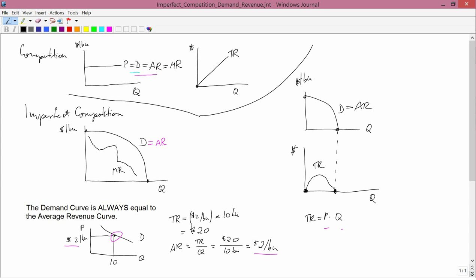We already knew what they look like with perfect competition. Total revenue, average revenue, marginal revenue, price and demand.